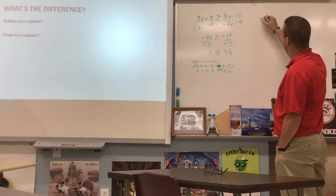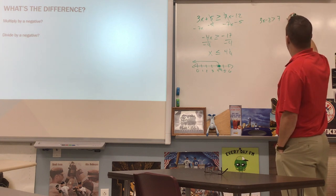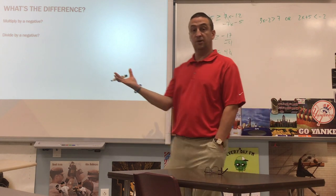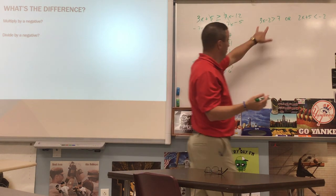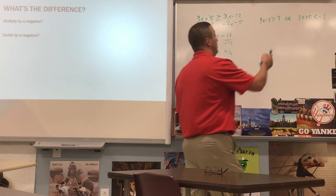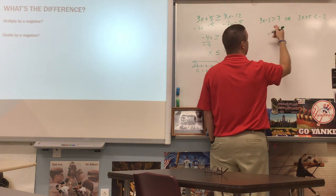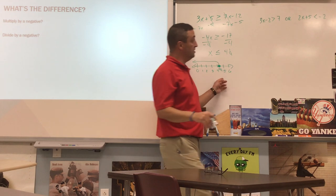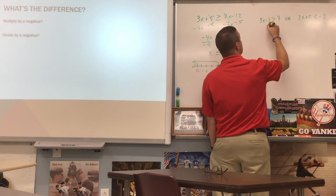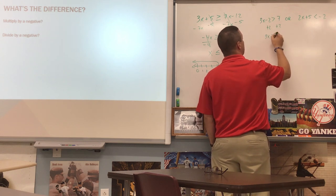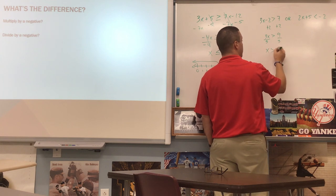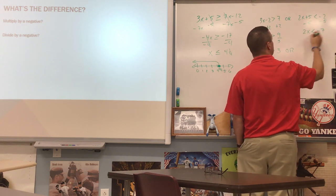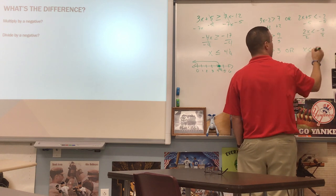What about a compound inequality? What if I have 3x minus 2 is greater than 7, or 2x plus 5 is less than negative 2? This still falls under the category of linear — it's just now a compound inequality. We've got a compound 'or', and in a minute we'll do one with an 'and'. I solve each one completely independently. Add 2: I get 3x greater than 9, divide by 3, x is greater than 3. Over here, subtract 5: I get 2x less than negative 7, divide by 2, x is less than negative 7 halves, which is negative 3 and a half.